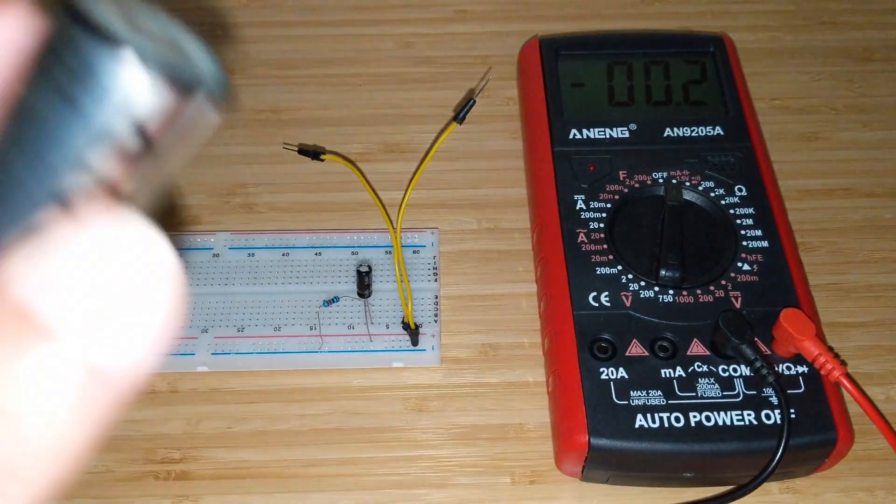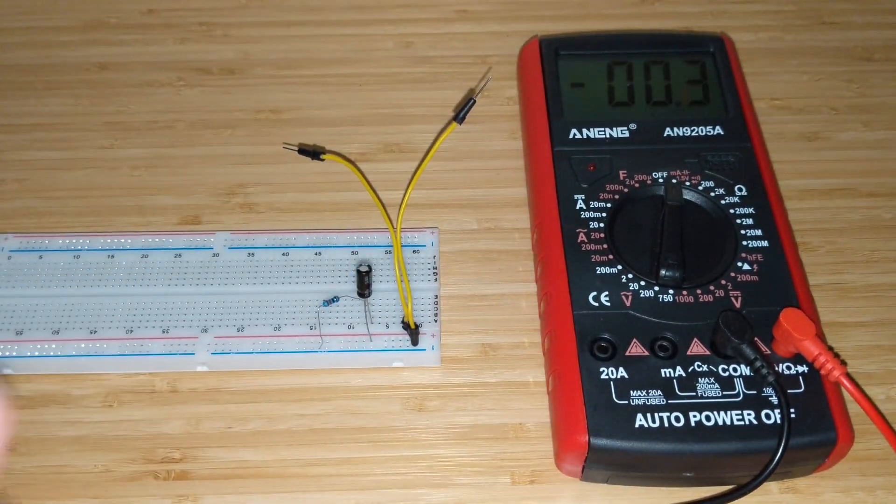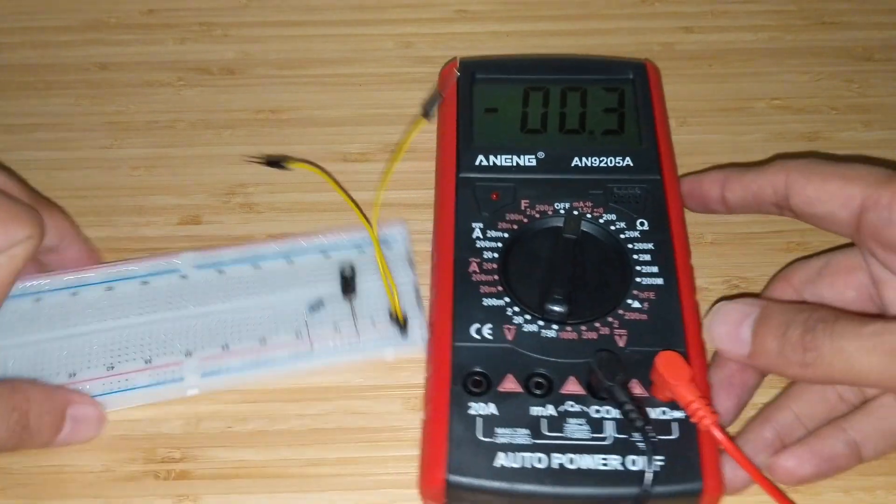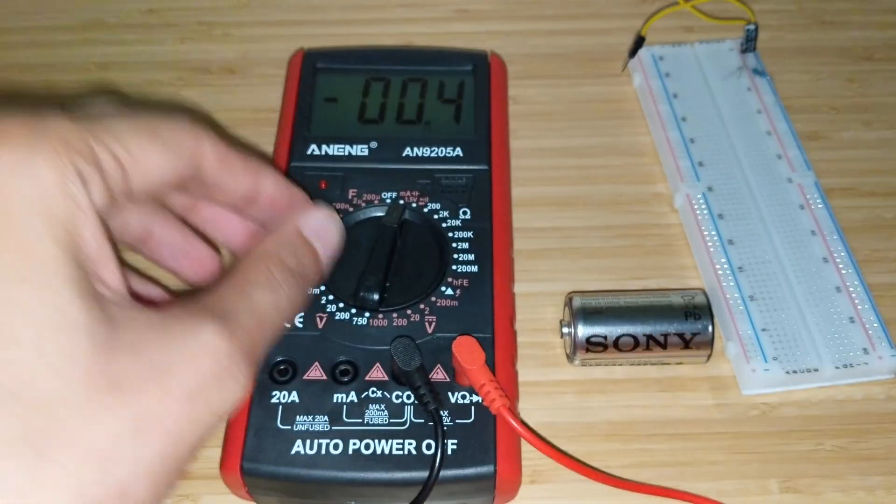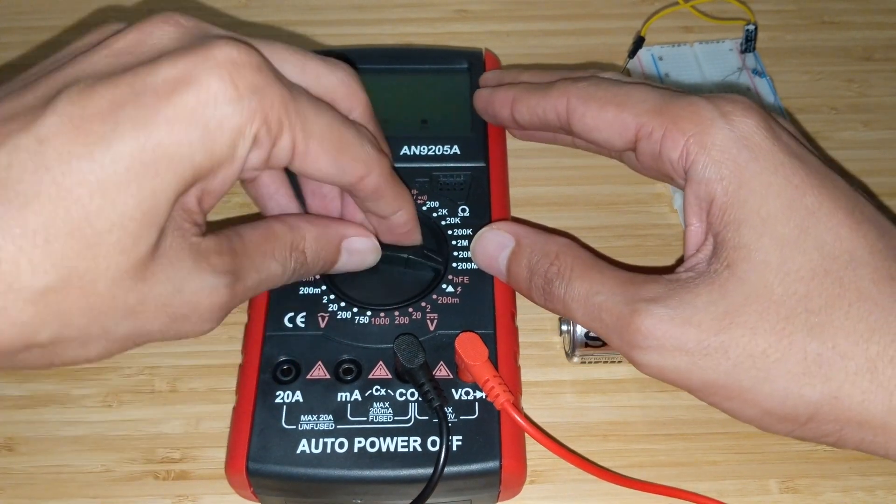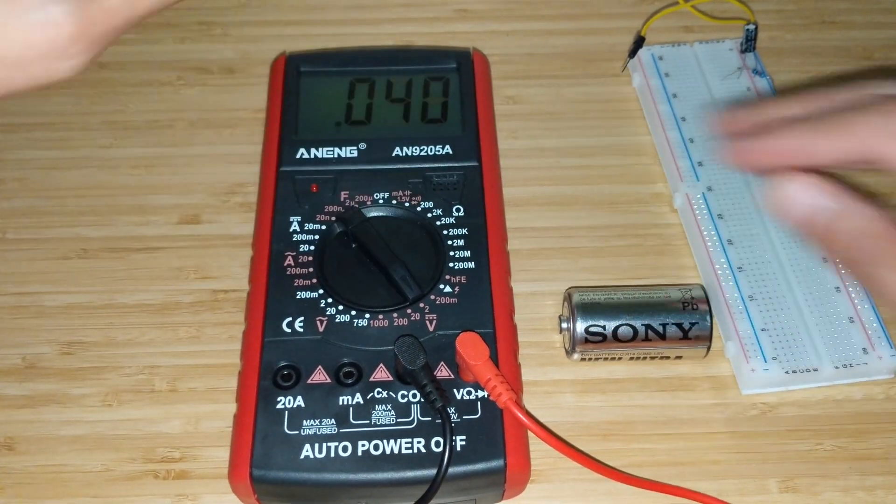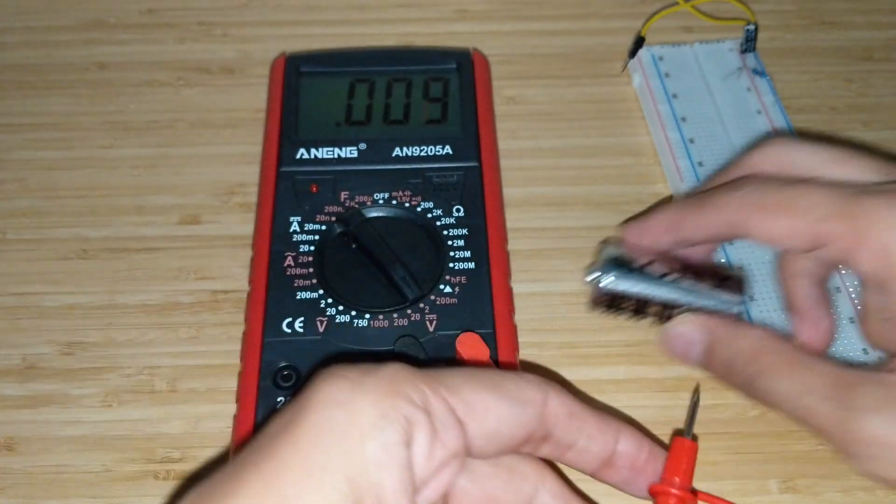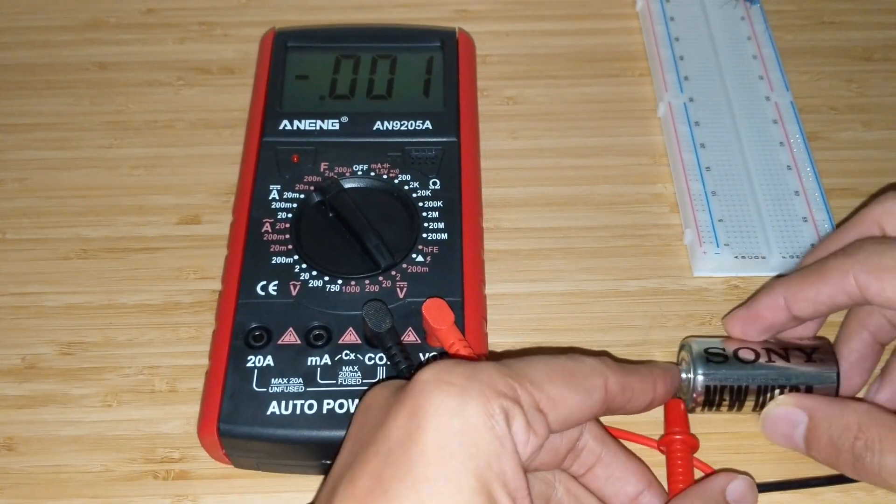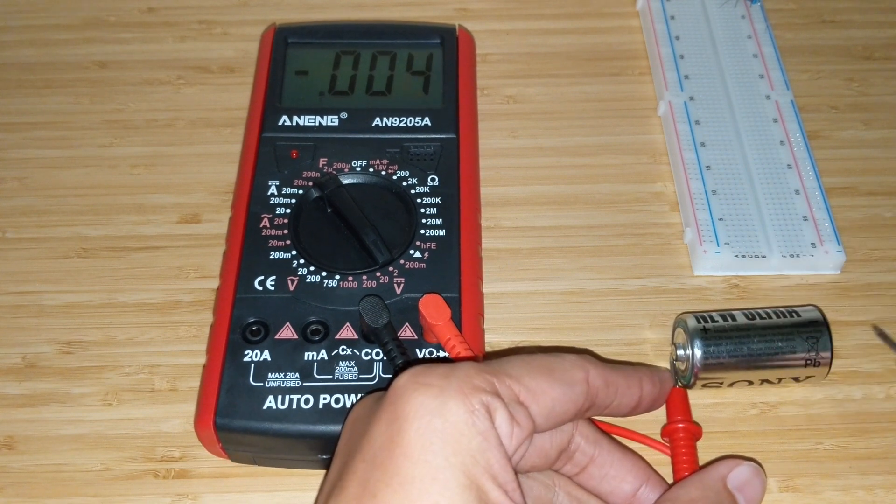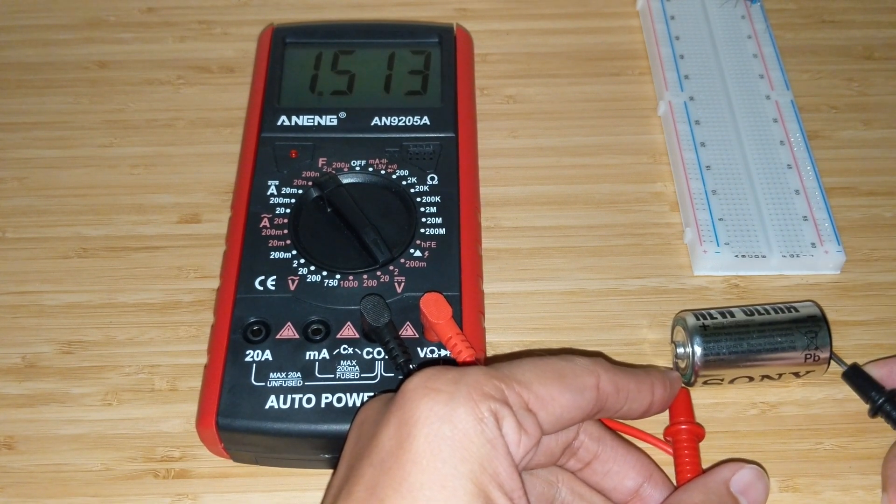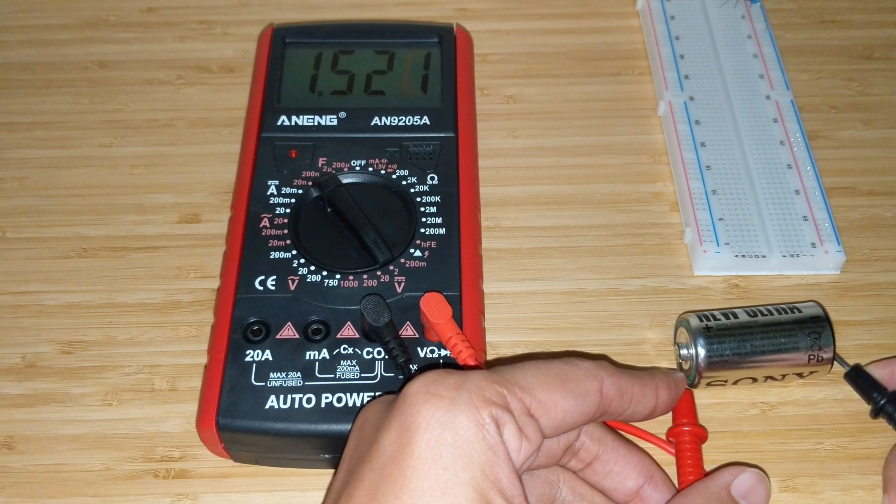And I have this dry cell 1.5 volt dry cell battery. What we are going to do is we are going to actually measure the voltage of this first. So let's first go to the voltage option and let's measure the voltage.